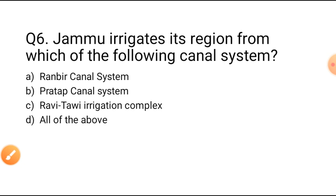Question number six: Jammu irrigates its region from which of the following canal systems? Option A: Ranbir canal system. Option B: Partap canal system. Option C: Ravi to Tavi irrigation complex. Option D: All of the above. Jammu irrigates its region from the Ranbir canal system, Partap canal system, and Ravi to Tavi irrigation complex, so Option D is the correct answer.